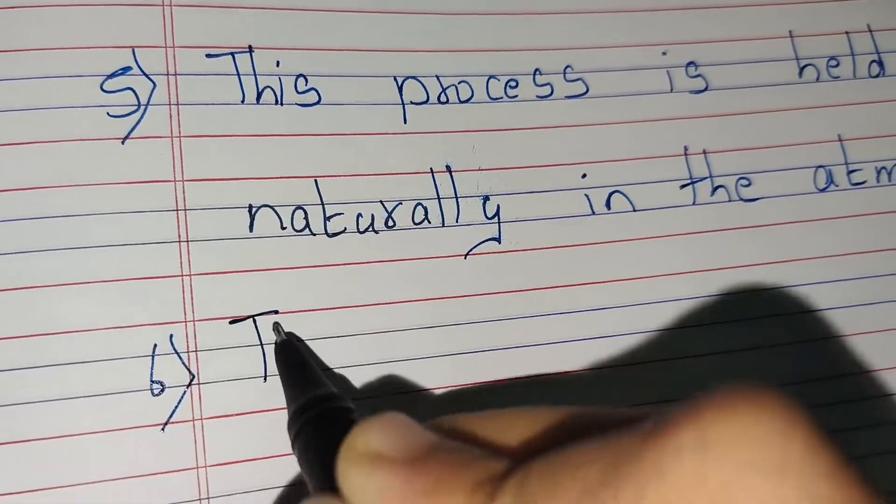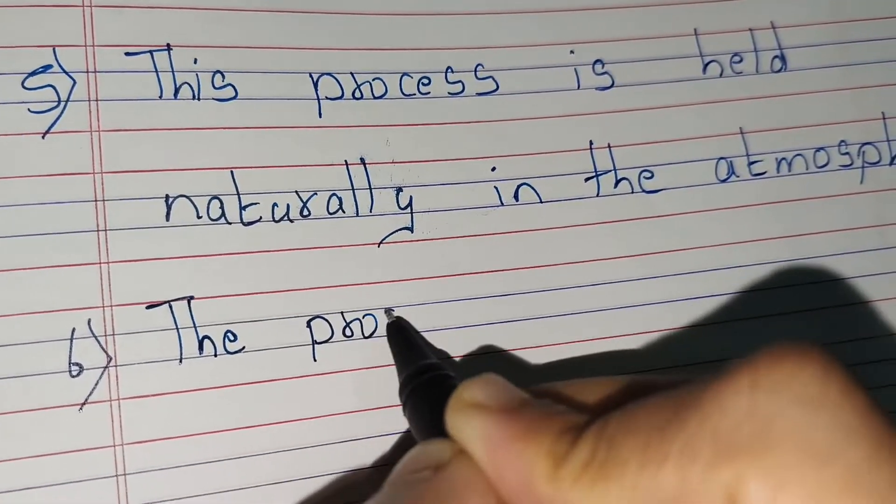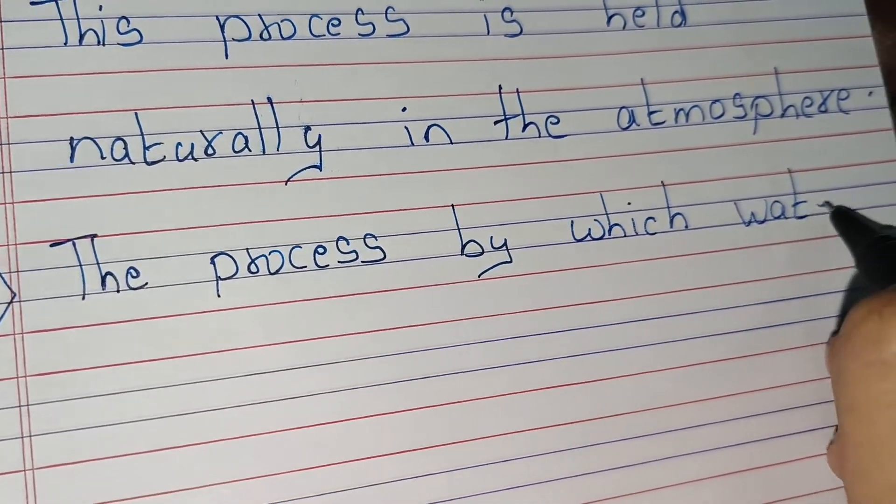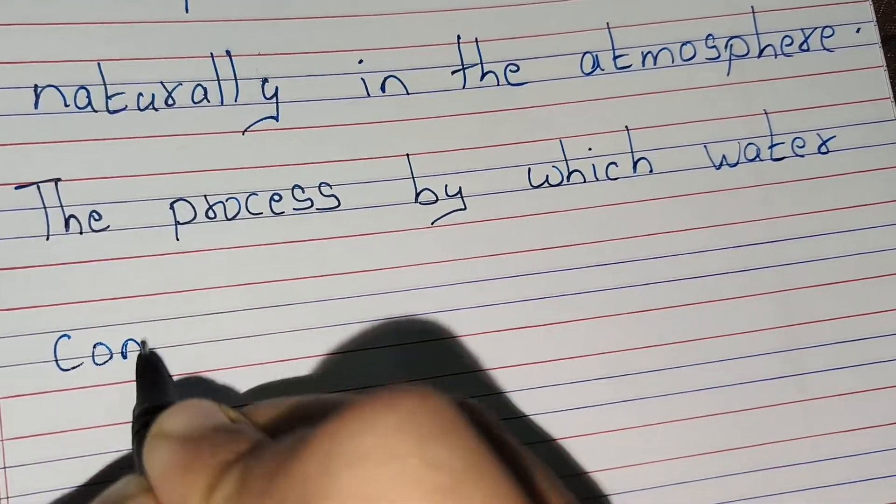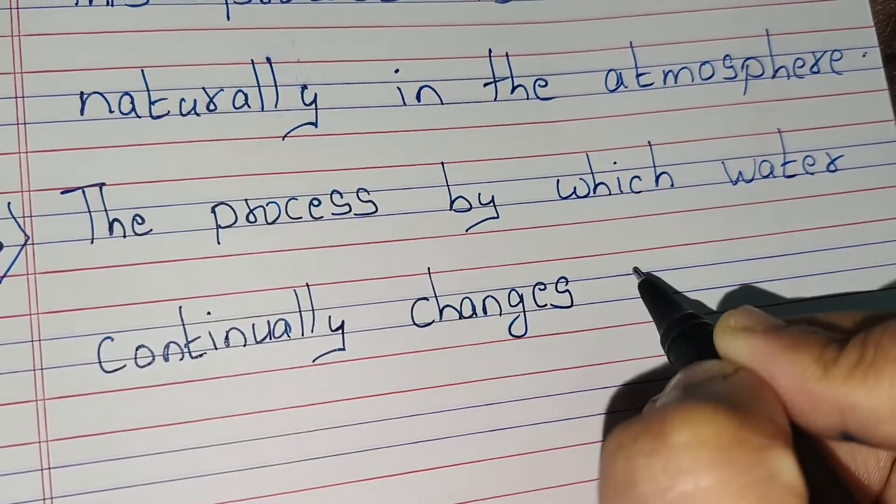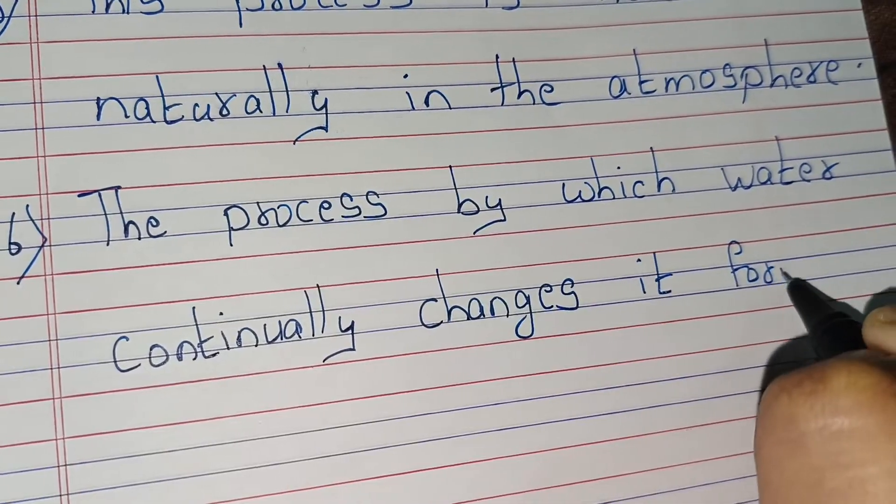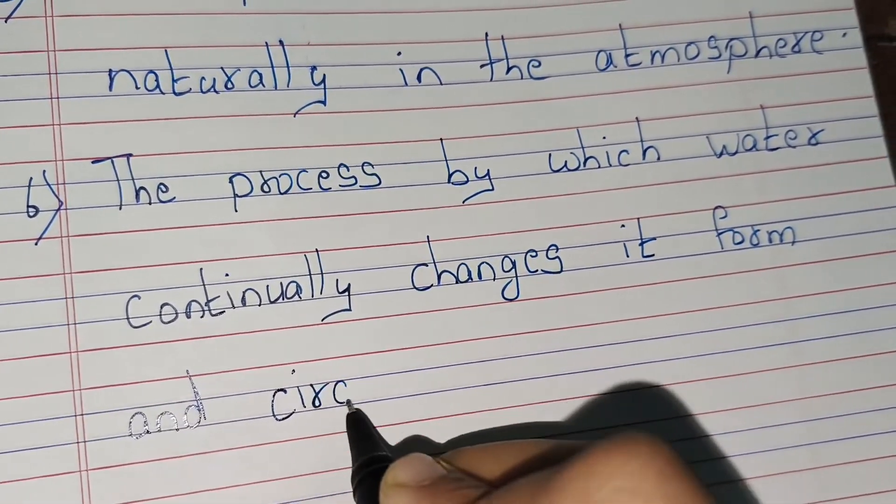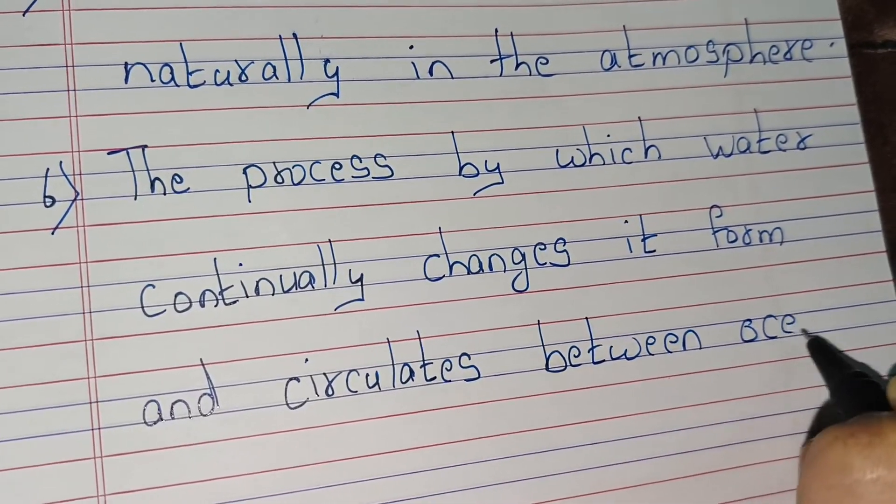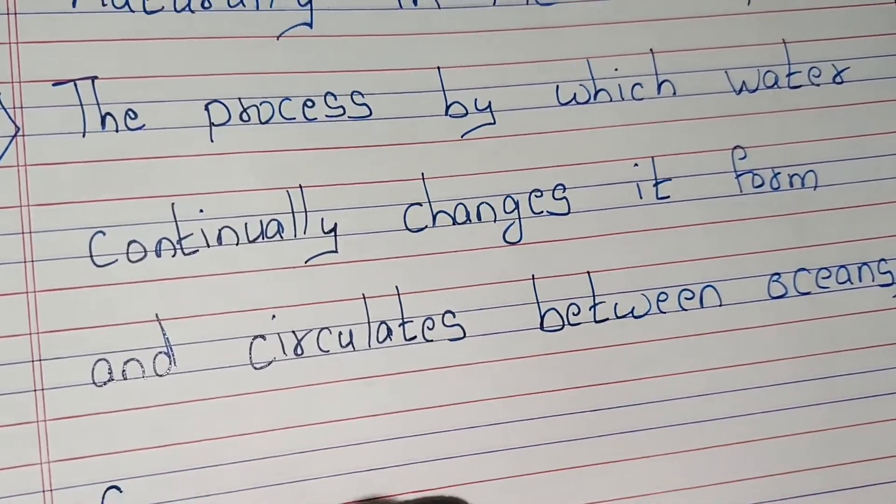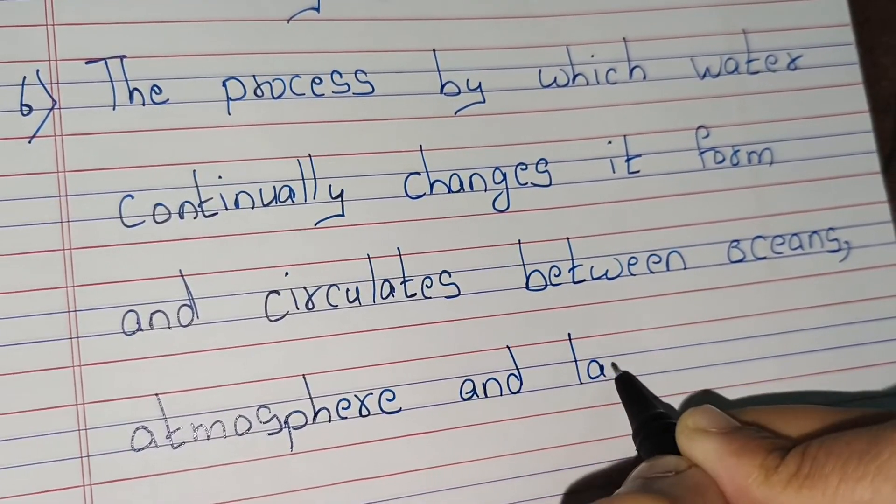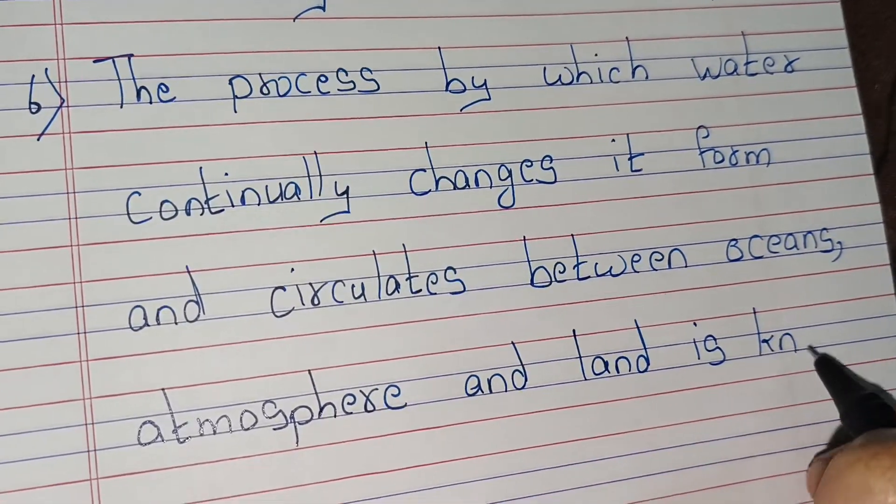The process by which water continually changes and circulates between oceans, atmospheres, and land is known as water cycle.